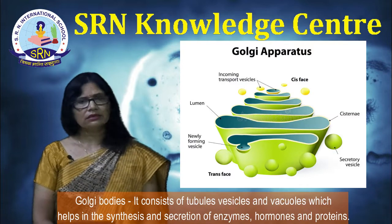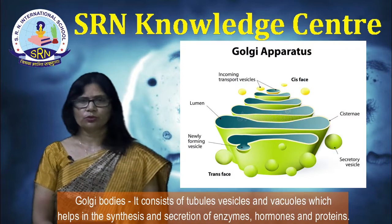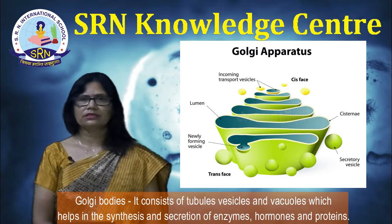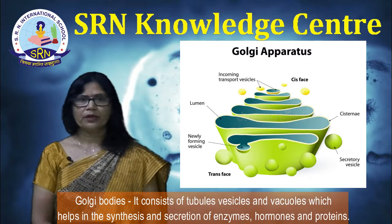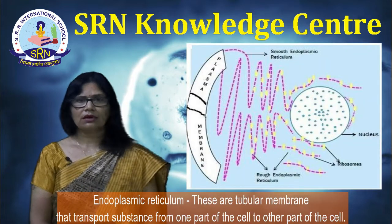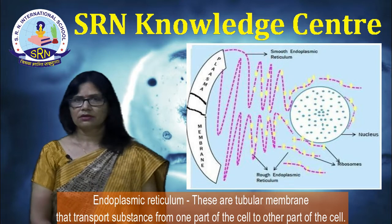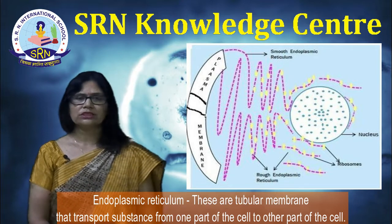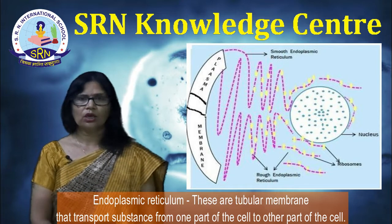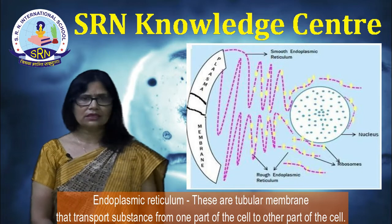Golgi bodies consist of tubules, vesicles, and vacuoles which help in the synthesis and secretion of enzymes, hormones, and proteins. Endoplasmic reticulum consists of tubular membranes that transport substances from one part of the cell to another.